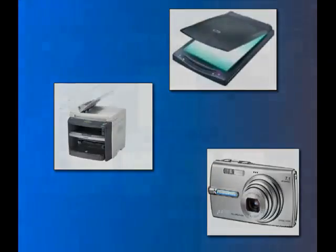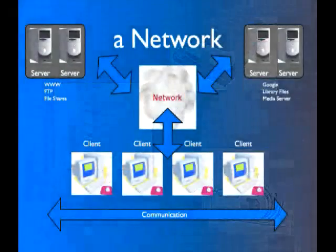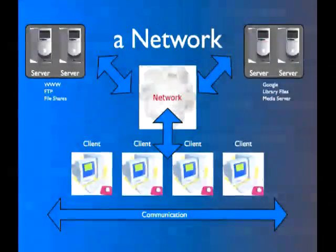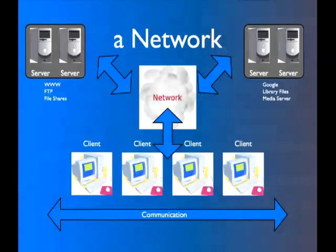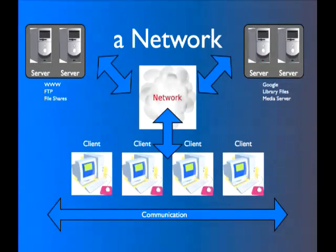Here we have a diagram of a simple classroom lab. We have client PCs along the bottom. They are normally connected via a wired connection, or CAT5. This is a type of LAN, or local area network. Typically, a lab's PCs would be connected together using a hub or switch.